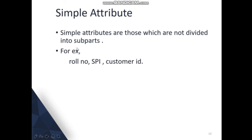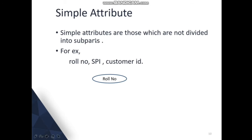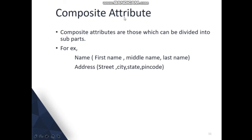Simple attributes are those which are not divided into sub parts. For example, roll number has a simple single value and is not divided into other parts — so roll number is a simple attribute.